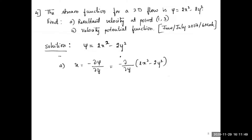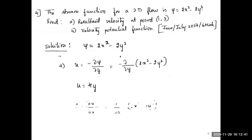Using the stream function ψ, the velocity component formula is u = −∂ψ/∂y. So we differentiate ψ = 2x² − 2y² with respect to y. The differentiation of 2x² with respect to y is 0, and the differentiation of 2y² with respect to y is 4y. With the negative sign: minus times minus gives plus, so u = 4y.